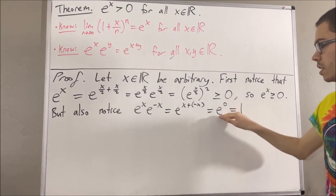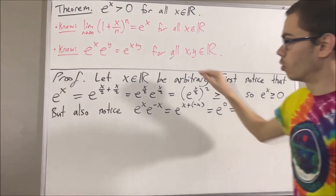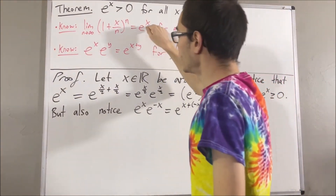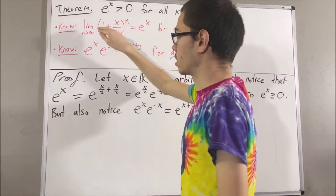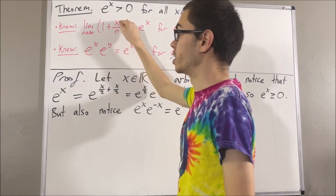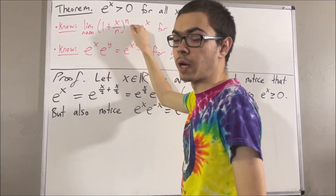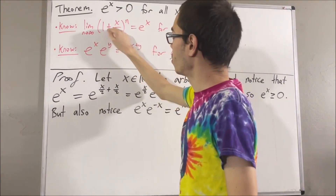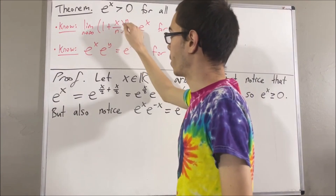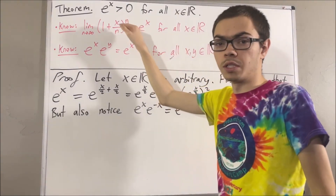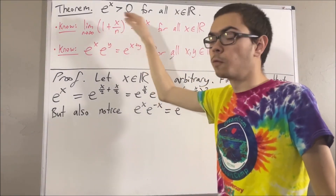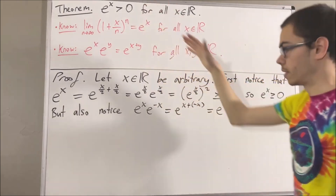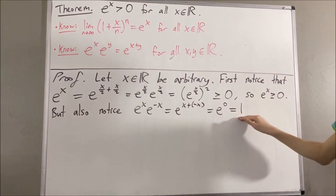Why is e to the zero equal to 1? Well, if we go to our first fact, e to the zero is really just the limit of the sequence 1 plus 0 over n to the power of n. But 1 plus 0 over n to the power of n is just a constant sequence of 1s, so of course it converges to 1. That's why e to the zero is equal to 1.